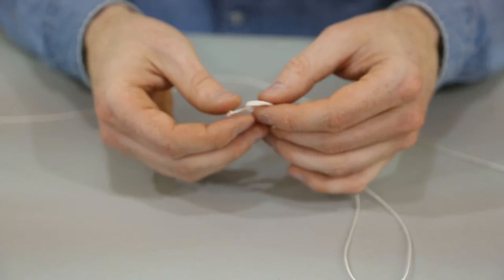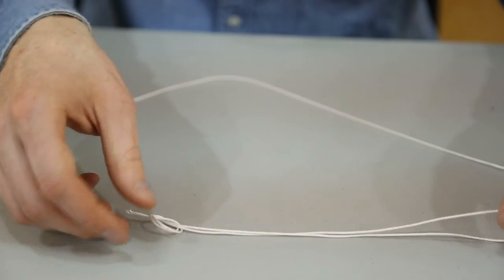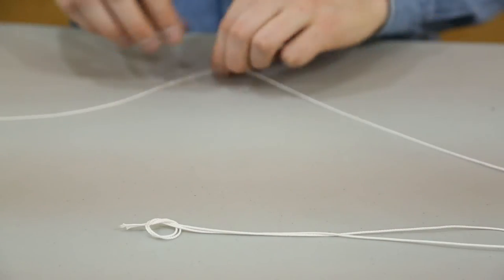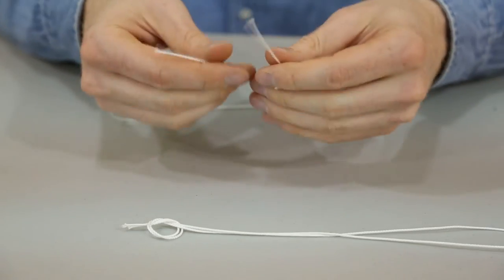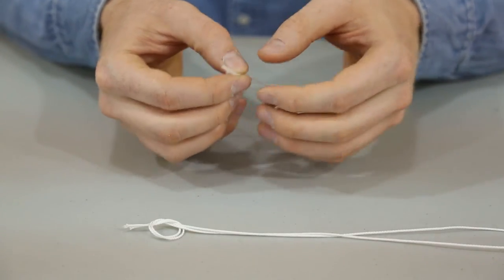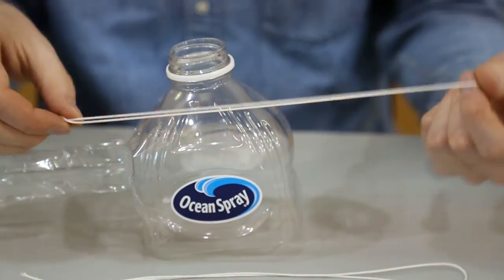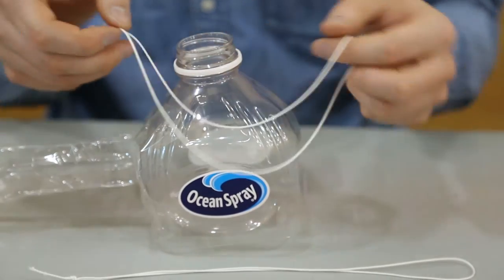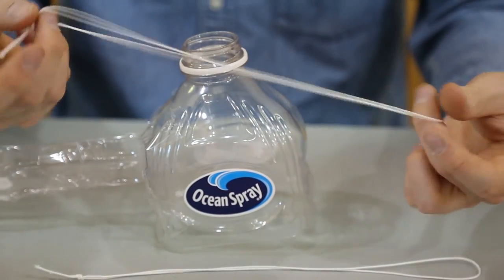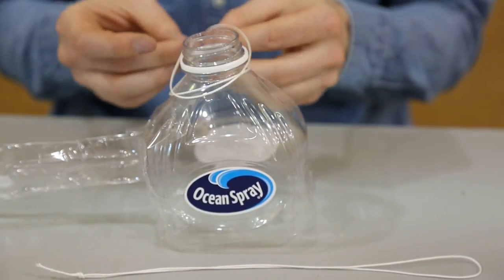Tie two overhand knots loosely in each loop and then pull them tight together. Now I'm going to loop them around the neck of the bottle and through themselves, each on one side.